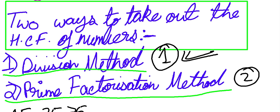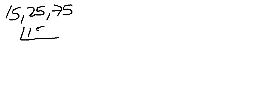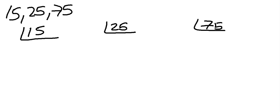Now we will use the prime factorization method to take out the HCF of numbers. Let's take the numbers 15, 25, and 75 again. First we have to take out the prime factors of these numbers. If you want to learn LCM, you can visit my channel N1 into tutorial and watch the video on how to take out the LCM of numbers.